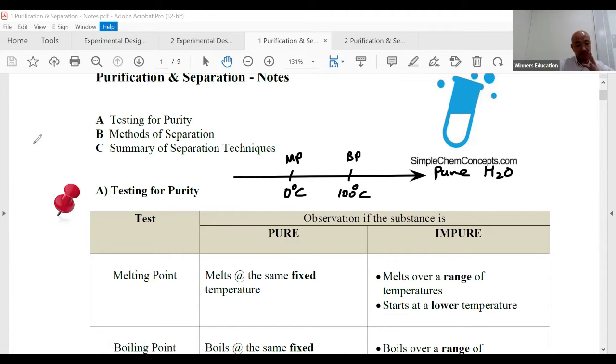And let's say this is pure water. I'm very sure this is the melting point and this is the boiling point. Okay, and this one is pure. When it's impure, I'm very sure this is what happened. All right, it melts at a lower temperature.